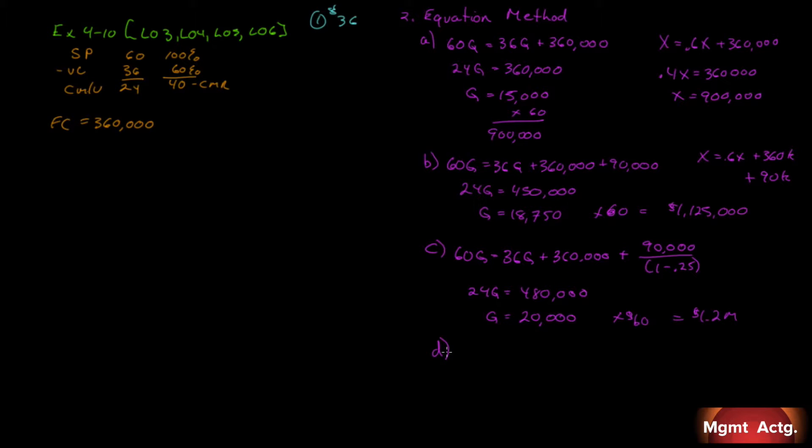D. Assume that through negotiation with the manufacturer, Super Sales Company is able to reduce its variable expense by $3 per unit. Well, we're at $36 right now, which means we'll be at $33. What is the company's new break-even point in units and sales dollars? So let's do the units first.